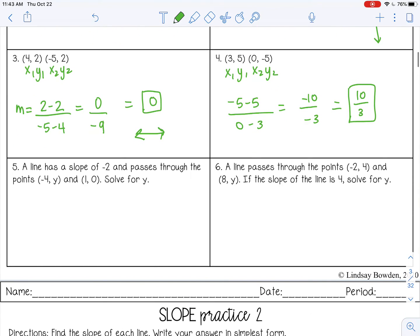The last two are a little bit different. So let's read it. A line has a slope of negative 2. So you're given the answer. You know the slope is negative 2. And it passes through the points negative 4, y, and 1, 0. And we want to solve for y. So in this case, we're given the slope and we're trying to go backwards and find one of the y values for the ordered pair. So I'm still going to label x1, y1, x2, y2. So remember, this is my formula. I already know the slope is negative 2. So negative 2 equals y2 minus y1. We don't know y1, so I'm just going to call it y over x2 minus x1.